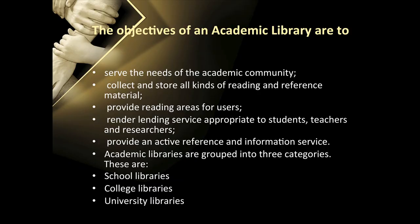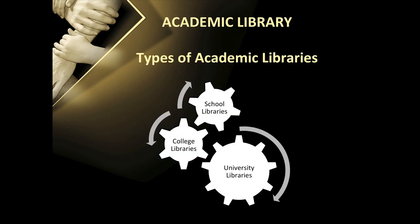The objective of an academic library is to serve the needs of the academic community, collect and store all kinds of reading and reference material, provide reading areas for users, and render lending services appropriate to students, teachers and researchers, as well as provide an active reference and information service. Academic libraries are grouped into three categories: school libraries, college libraries, and university libraries.